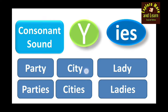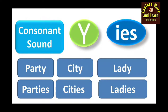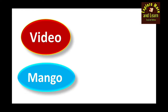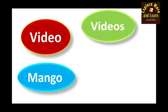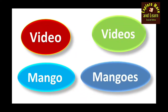So for words ending with the letter Y having a consonant sound just before it, we add IES by removing the letter Y. We will not remove the letter Y if a vowel sound appears before it. Now for the second rule: the plural of 'video' is 'videos' and the plural of 'mango' is 'mangoes' — why is it so? Let's look at the rule.